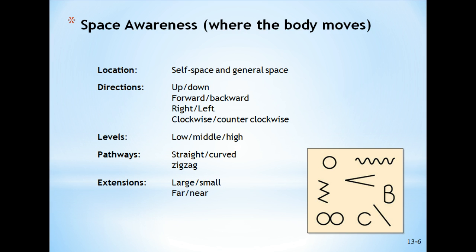Here are some examples of content to teach students in relation to this concept and other skill themes. It's where the body moves — self-space and general space. Directions include up, down, forward, backward, right, left, clockwise, counterclockwise. Levels are low, middle, and high. Pathways are straight, curved, and zigzag. Extensions are large, small, near, and far. All of those definitions are listed on the movement wheel.